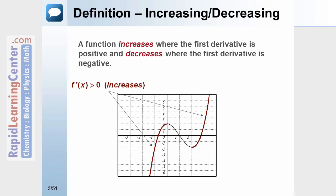So this function is increasing in those red intervals. It's now showing in blue the area where the first derivative would be negative, so the original function is decreasing.